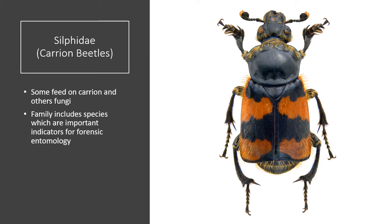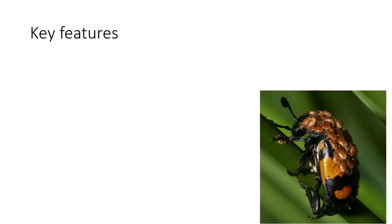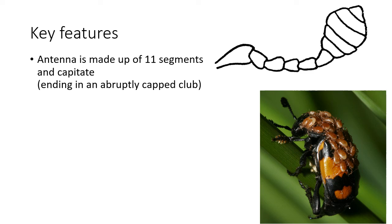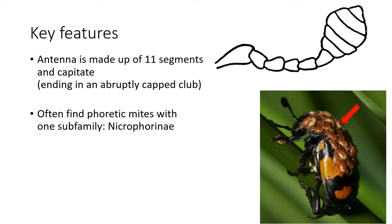Next, we have Silphidae, or carrion beetles. These beetles feed on decaying organic matter, such as dead animals. Silphids are considered to be of importance to forensic entomologists because when they are found on a decaying body, they are used to help estimate how long the body has been dead. They also have a mutualistic relationship with mites: the mites get transferred to carrion by the beetles, and they reduce the number of competitors, so both species are able to reproduce successfully. Carrion beetles have 11 segments in their antennae, and it ends in an abruptly capped club. The beetle shown in the photo can be seen with the mites.